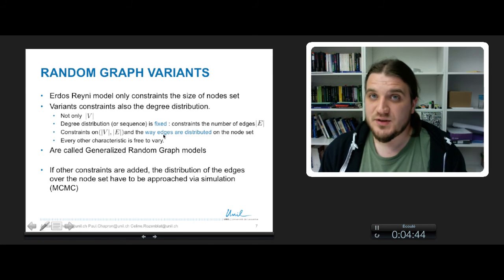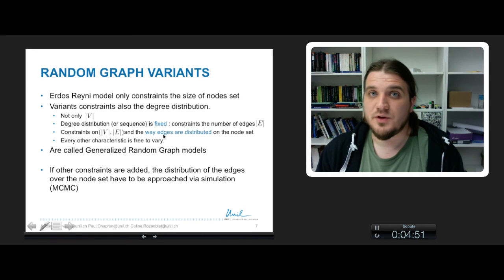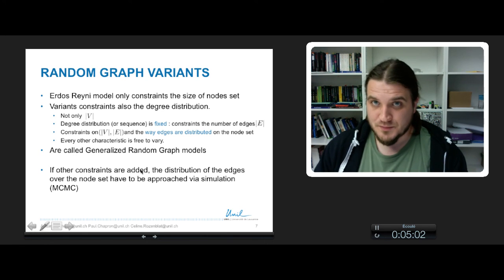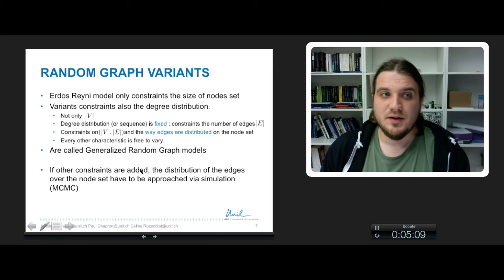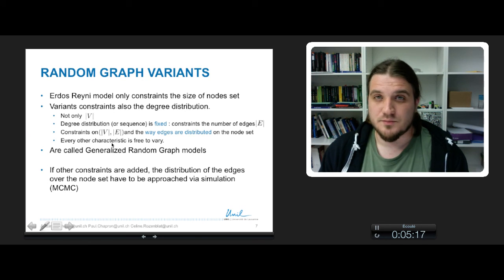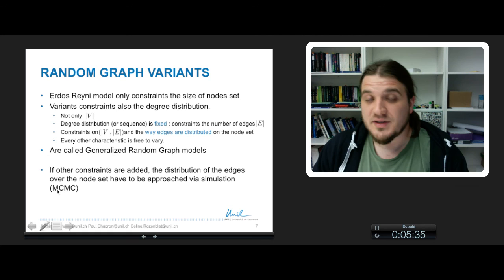But every other characteristic is free to vary. And by making variations, for example, by constraining the length of paths or the number of triangles, we have many variants of these random graph models. These kinds of models are called generalized random graph models. In fact, if you remember the course on ERGM models, you know that by adding characteristics like the number of triangles, the number of four cycles, the number of reciprocate ties between nodes, these characteristics produce a particular distribution of edges or degrees that are very difficult to compute, but that we can approach by simulation using Monte Carlo Markov chain estimation.